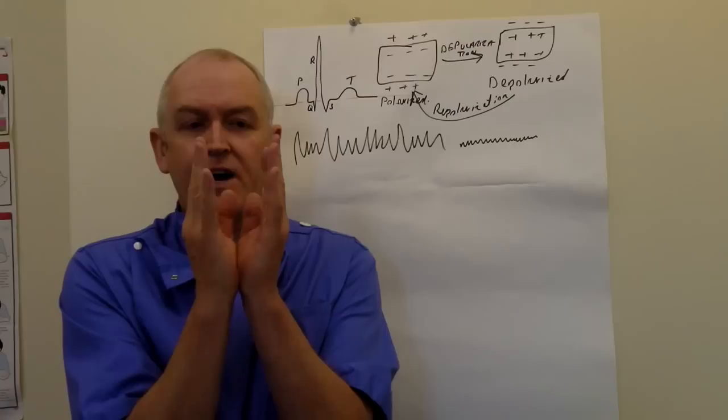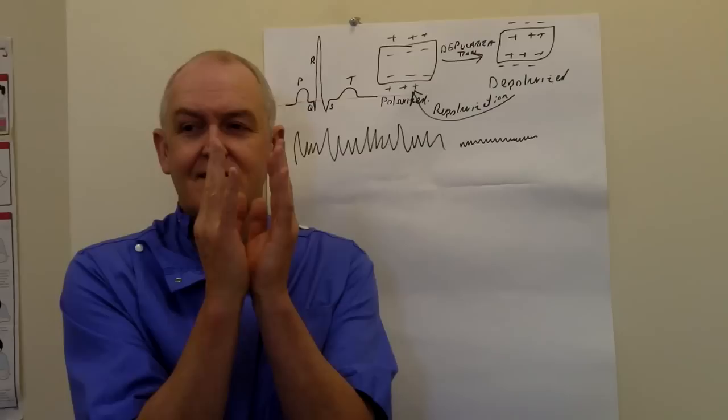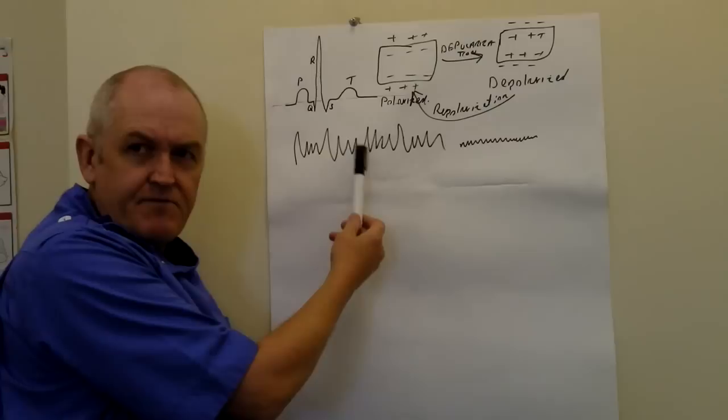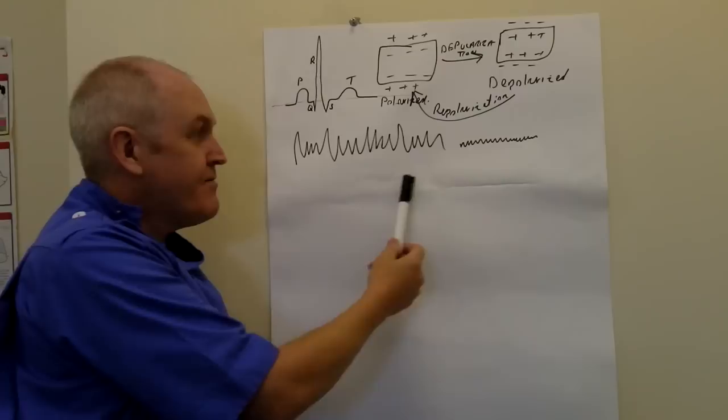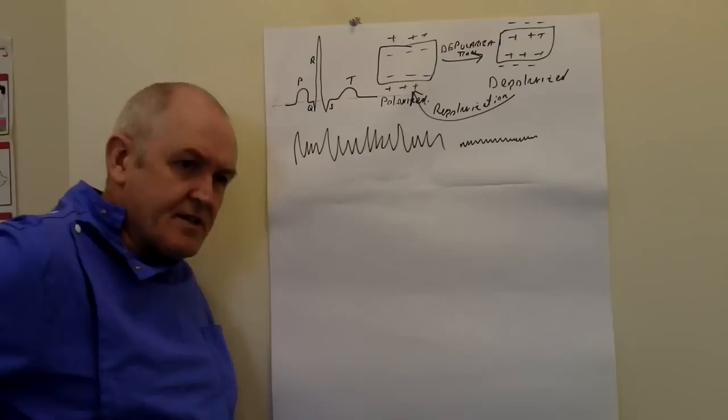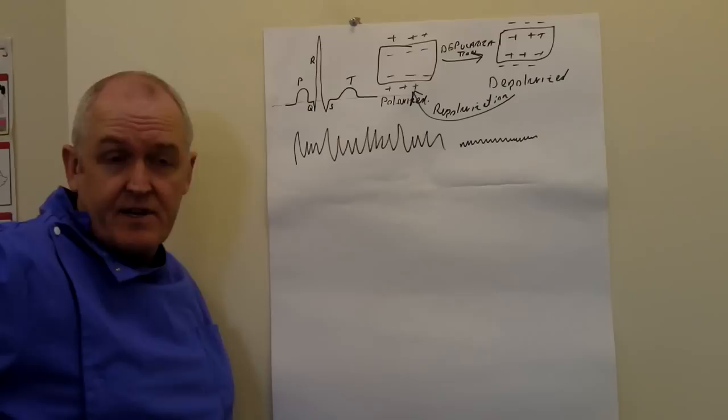Coarse ventricular fibrillation becomes fine ventricular fibrillation. Clinically it's important because if someone's in fibrillation you need to defibrillate — make sure they are in ventricular fibrillation. They'll also be unconscious and have no pulse. With fine ventricular fibrillation, it's harder to shock them — you might need to oxygenate them, give CPR, or even give some adrenaline to coarsen up the ventricular fibrillation to make it more shockable.